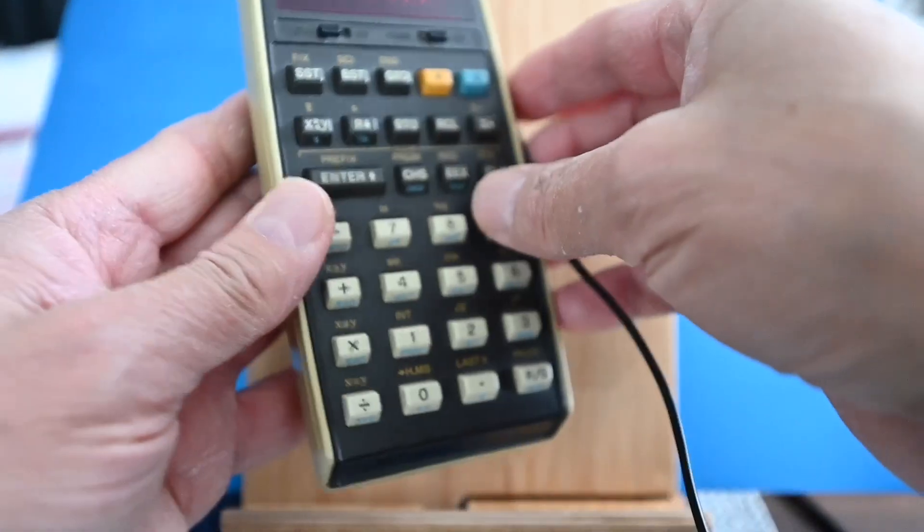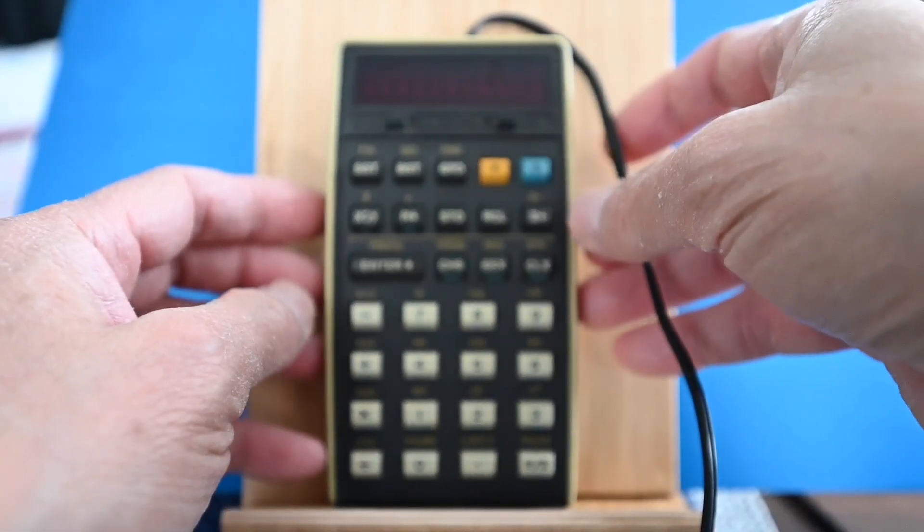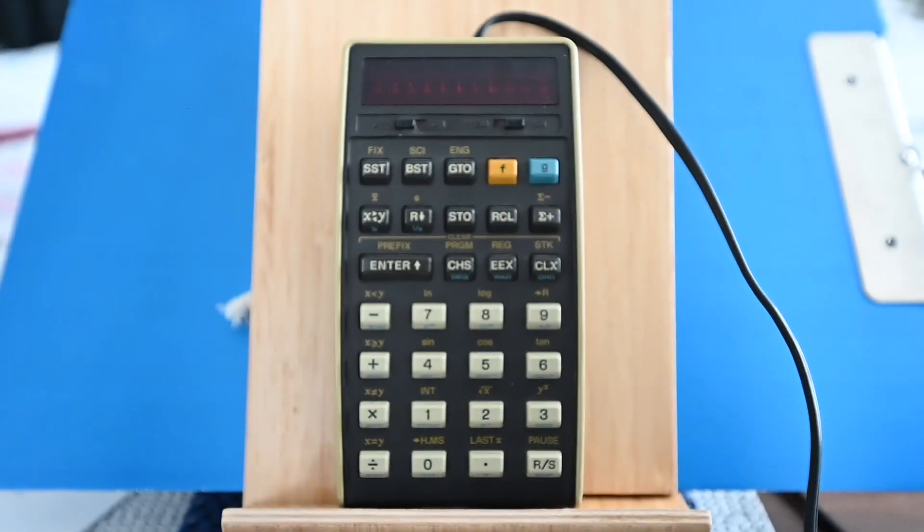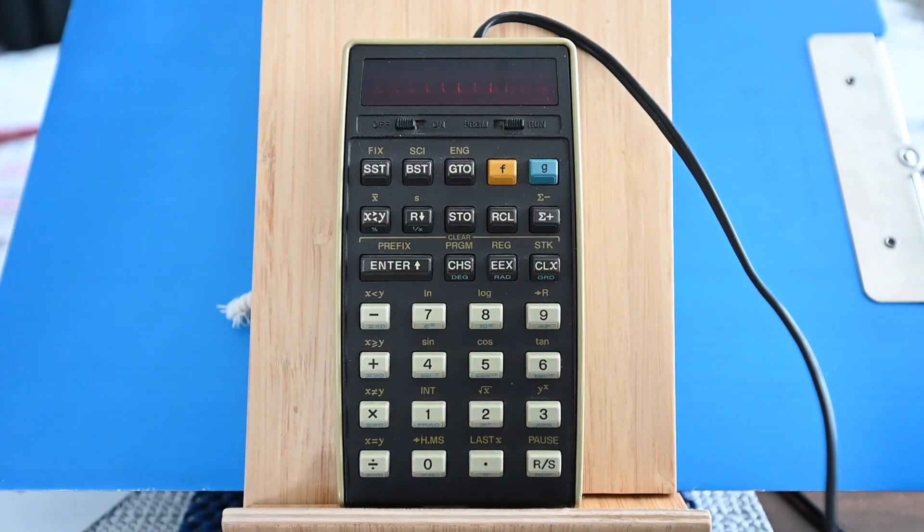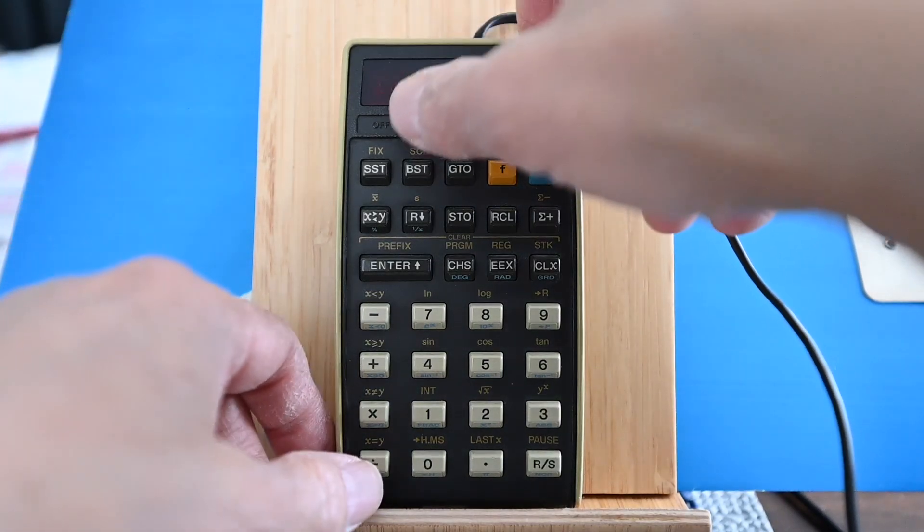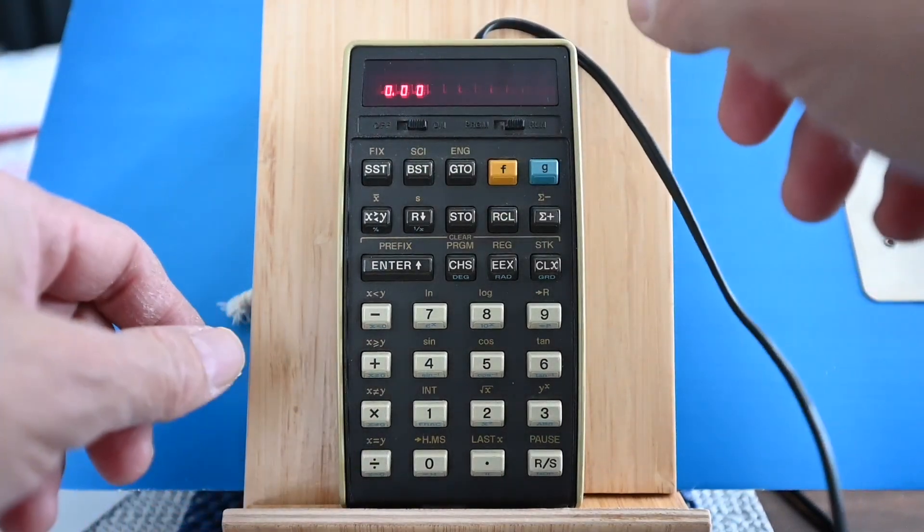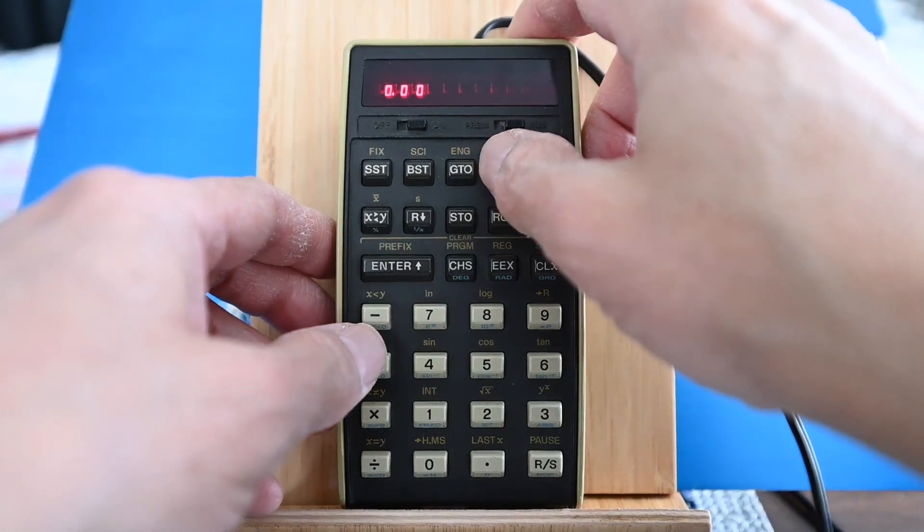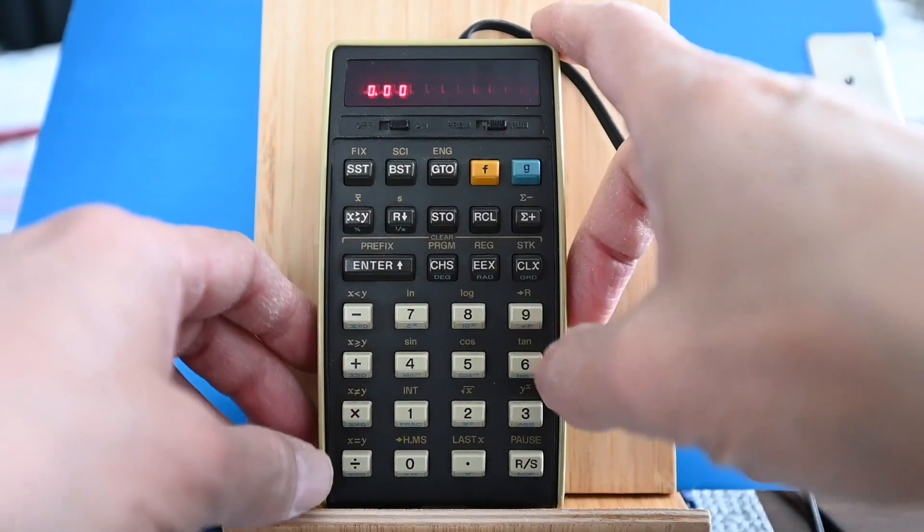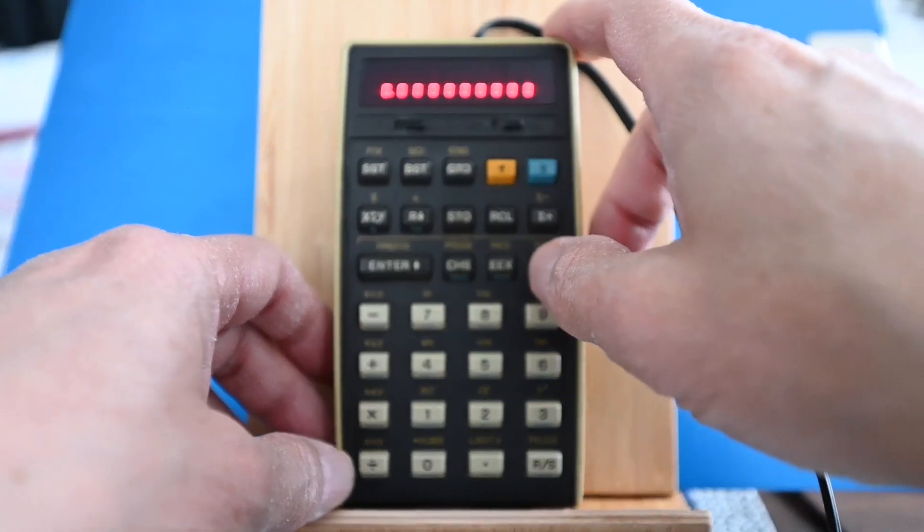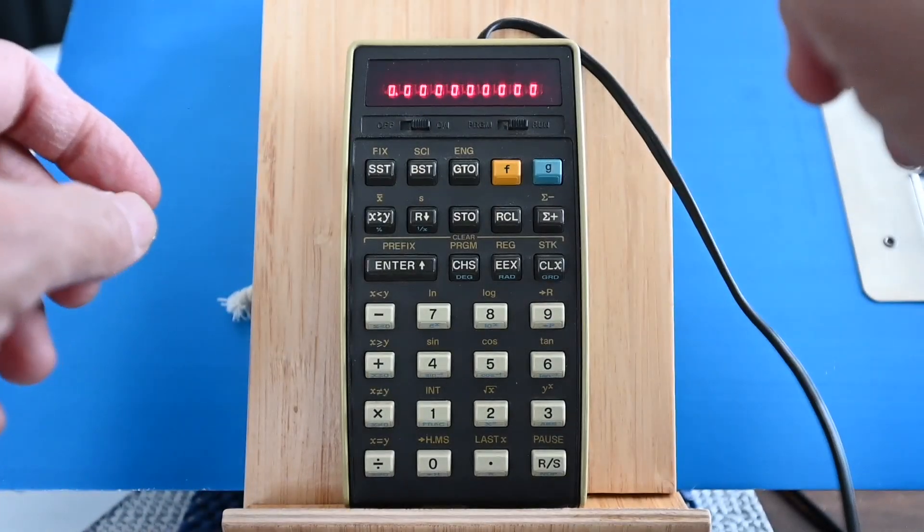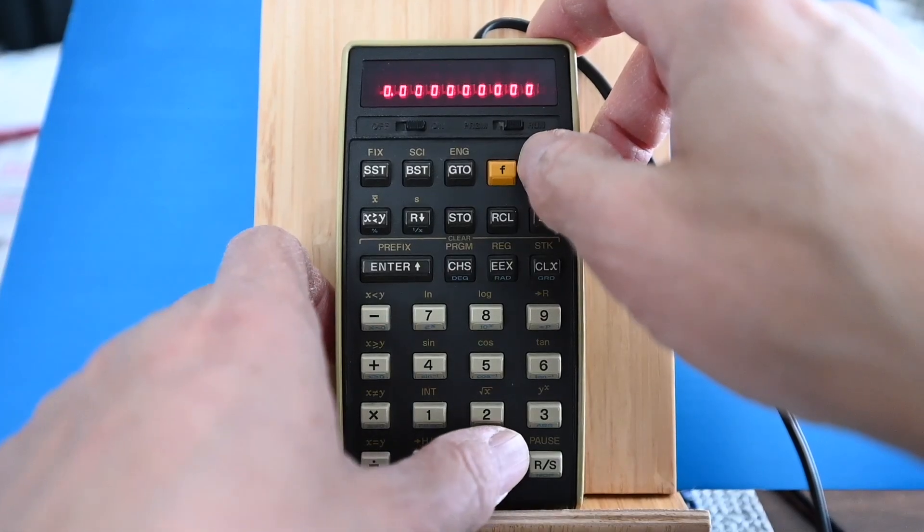So it's kind of nice that it still works. So let me turn it back on. Set the digits to nine. And let's pull up pi again.